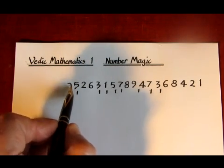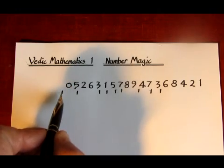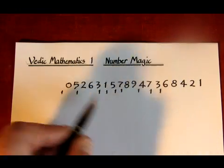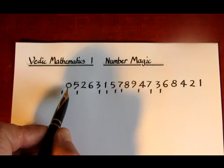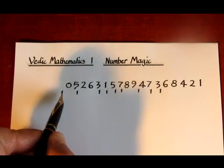2 5s are 10. At this point we have a 0 with a 1 to carry. And if I was to continue then we would find that 2 0s are 0. Add the carry one makes 1.